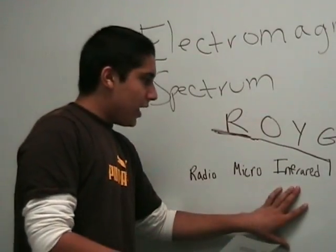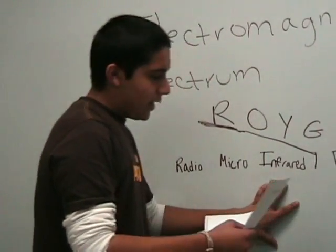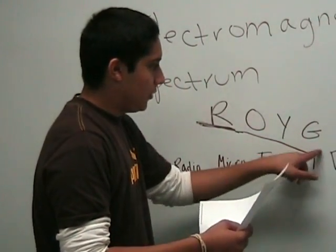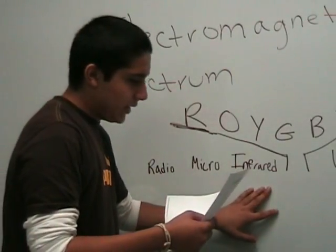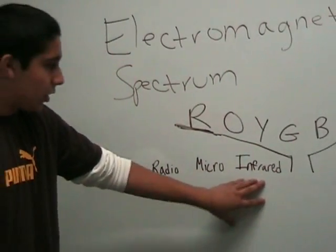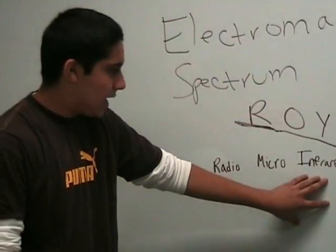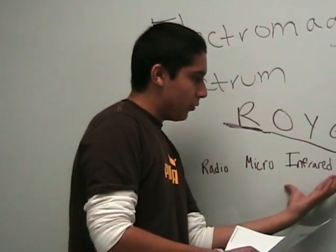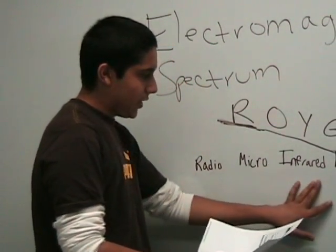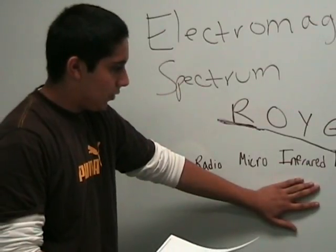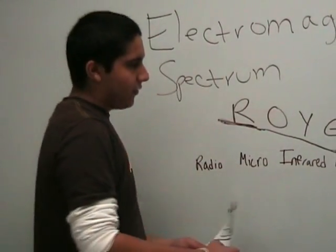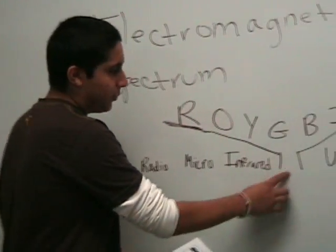Next we have infrared, and infrared is pretty close to the visible light section. Infrared is mainly used on lock-on missiles because it targets heat waves. There are also goggles which have infrared so you can see through objects and sense heat.